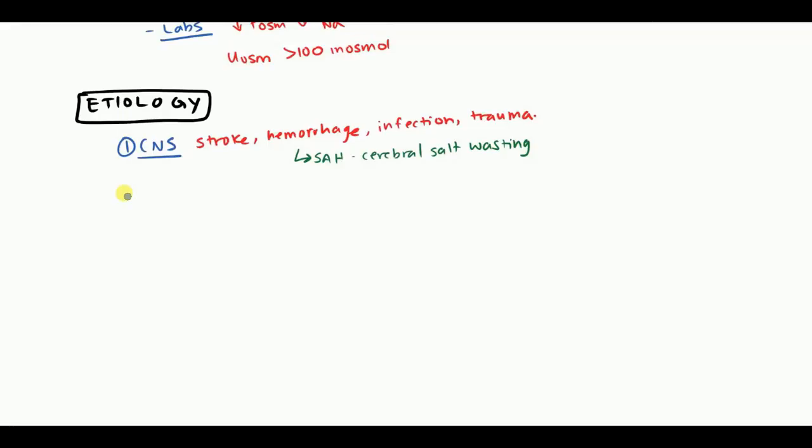Besides CNS, obviously there are many drugs associated with SIADH. These are drugs such as carbamazepine, chlorpropamide, SSRIs can also cause SIADH. Cyclophosphamide can also cause SIADH, and this is actually very difficult to deal with.